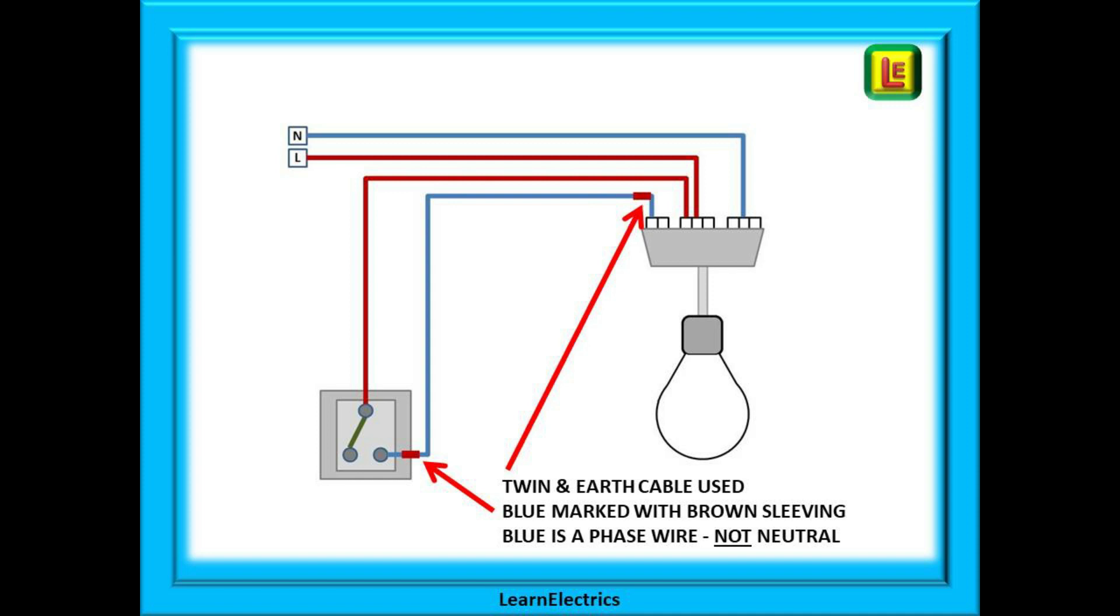One important piece of safety advice. We are using standard twin and earth cable to connect between the ceiling rose and the switch. This means that the blue wire that returns from the switch to the ceiling rose is not neutral. It is not neutral. It is a phase wire and it can have 230 volts on it.